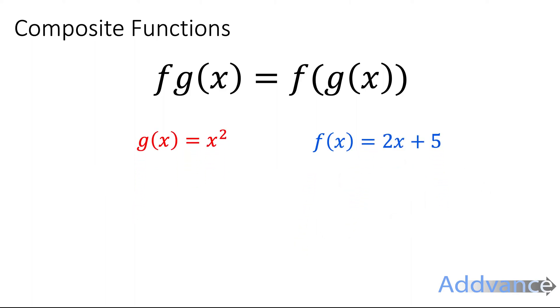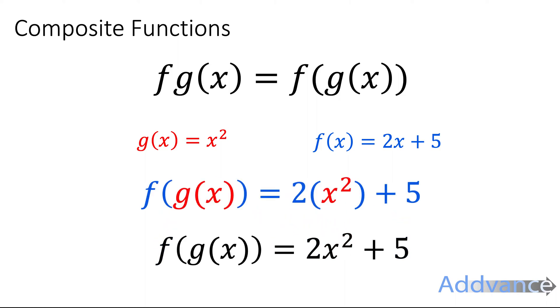Now another way to think about this is that we are putting g of x into f of x like this. So we take f of x and we're going to put g of x inside. g of x is x squared, so the x part of f has been replaced by g. And we get this: f of g of x is 2x squared plus 5.